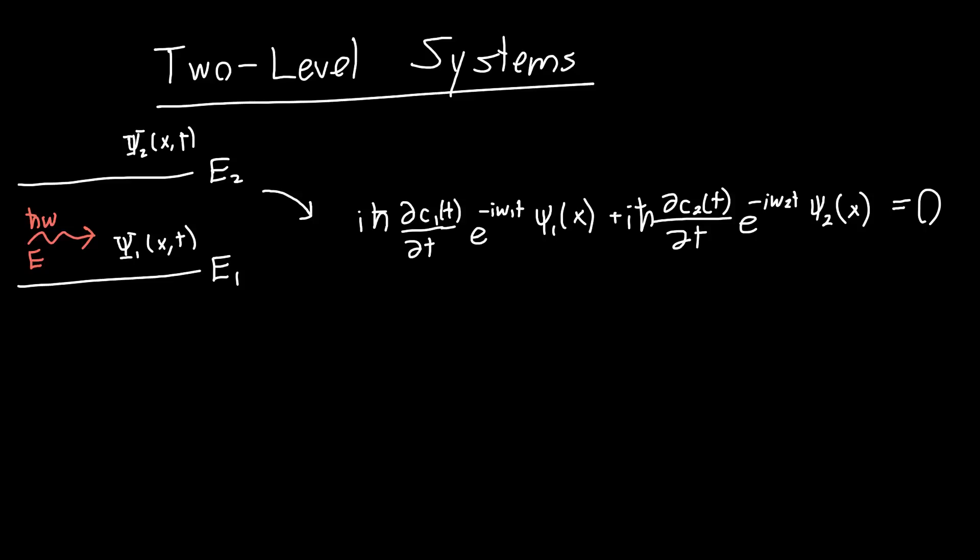So what we'd really like is an equation just in terms of c1 and just in terms of c2. And right now we've got one equation that's in terms of both c1 and c2, so it seems like we're stuck. It seems like we can't do anything. And indeed, I stared at this for a while, not having any idea what to do.